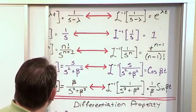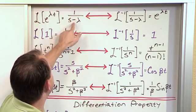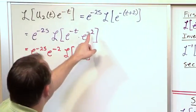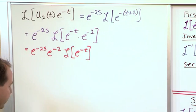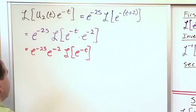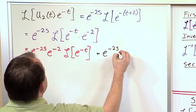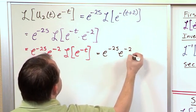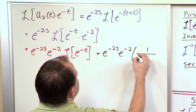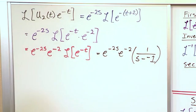So I have e to the minus 2s times e to the minus 2, and I still have to take the Laplace transform of e to the minus t — but this I feel confident doing. Because the very first thing we learned was the Laplace transform of e to the λt equals 1 over s minus λ. In this case λ is negative 1, so it's s minus (negative 1), giving s plus 1. So the final result is e to the negative 2s times e to the negative 2, times 1 over (s plus 1).